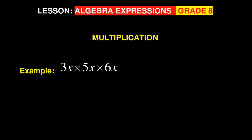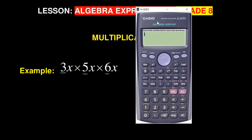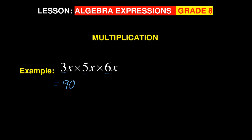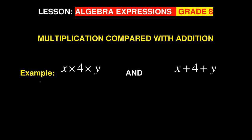Here's another example: multiply 3x times 5x times 6. When multiplying, first focus on the numbers — 3, 5, and 6. Using a calculator, 3 times 5 times 6 gives 90. Now for the x's: you're multiplying x times x times x, so you write x and count how many — you multiplied three, so that three becomes the exponent. The answer is 90x³.